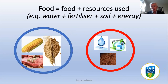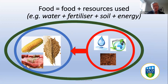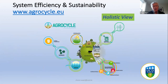If you look at food, you really need to look not just at the food commodity itself, but also the resources used to produce that food — including, for example, water, fertilizer, soil, energy, and others. If you do that, you have to take an integrated, holistic perspective. And that completely changes the way you look at food. This schematic from the AgroCycle project, I think, summarizes the overall concept — it takes a holistic view.